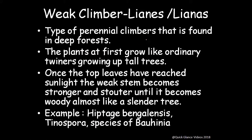The other form of weak climber is lianas — perennial climbers found in deep forests. The plants first grow like ordinary twiners, growing up with tall trees. Once the top leaves reach sunlight, the weak stem becomes stouter until it becomes woody, almost like a slender tree. Examples include Hiptage benghalensis, Tinospora species, and Bauhinia species.